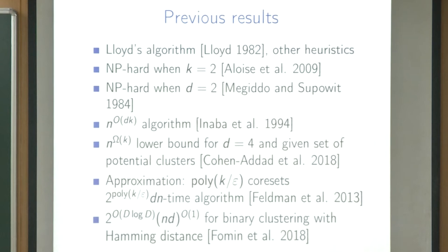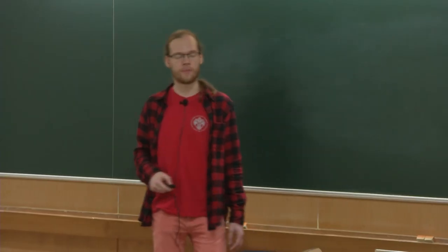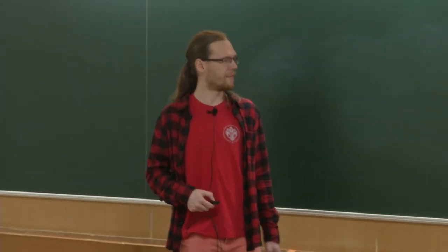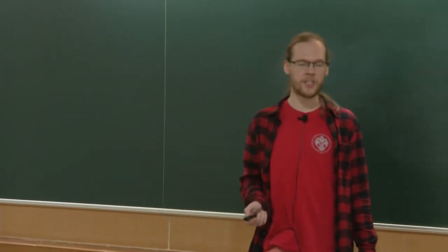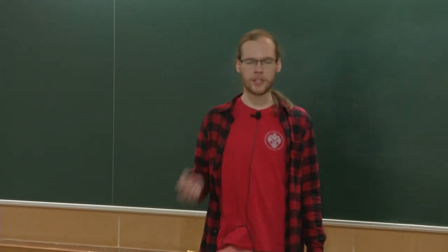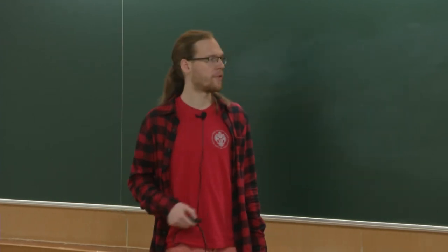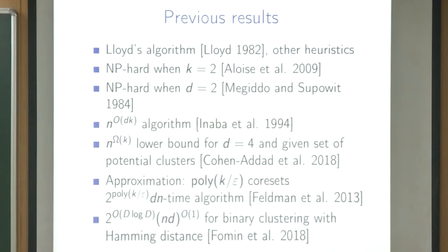The closest paper to what I will present is one about binary clustering with Hamming distance — it also studied low-rank approximation and other things, but this result is closest to ours. Recall that capital D is our budget — the total cost of the clustering we expect to have. If D is small, we can give an FPT algorithm: there is an algorithm running in time D^D, polynomial in n and d.